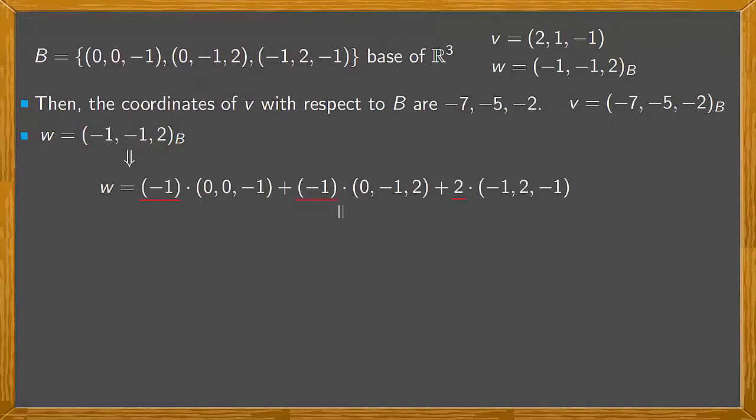Thus we obtain, operating here, this would be -1 times (0,0,-1), which is (0,0,1), plus -1 times (0,-1,2), which is (0,1,-2), plus 2 times (-1,2,-1), which is (-2,4,-2). And if we calculate this sum, adding component by component, we obtain (-2,5,-3).